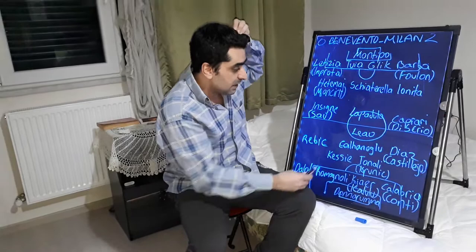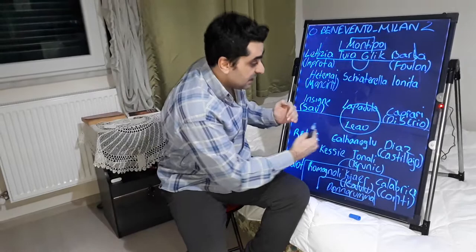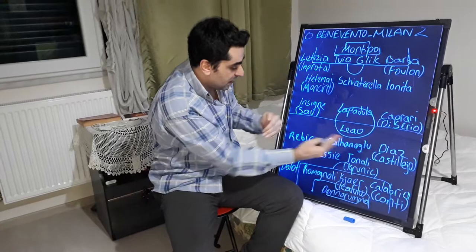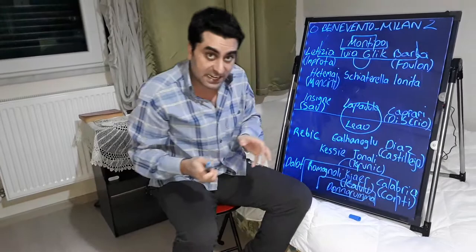In Milan, sometimes Leao changed his position — he came to the right, he came to the left. Sometimes Hakan Çalhanoğlu came to the left and supported the attacks. But Tonali saw a red card at 35 minutes of the game.